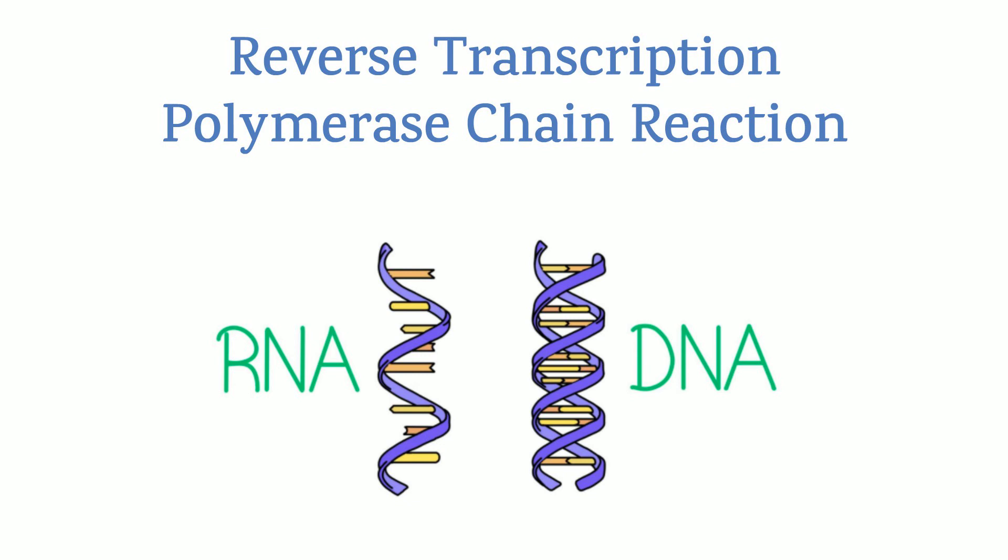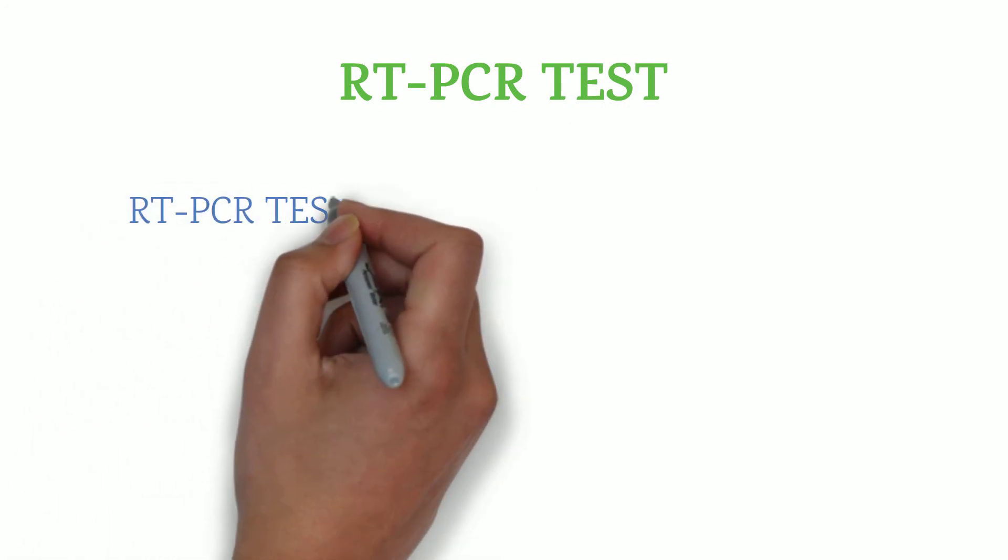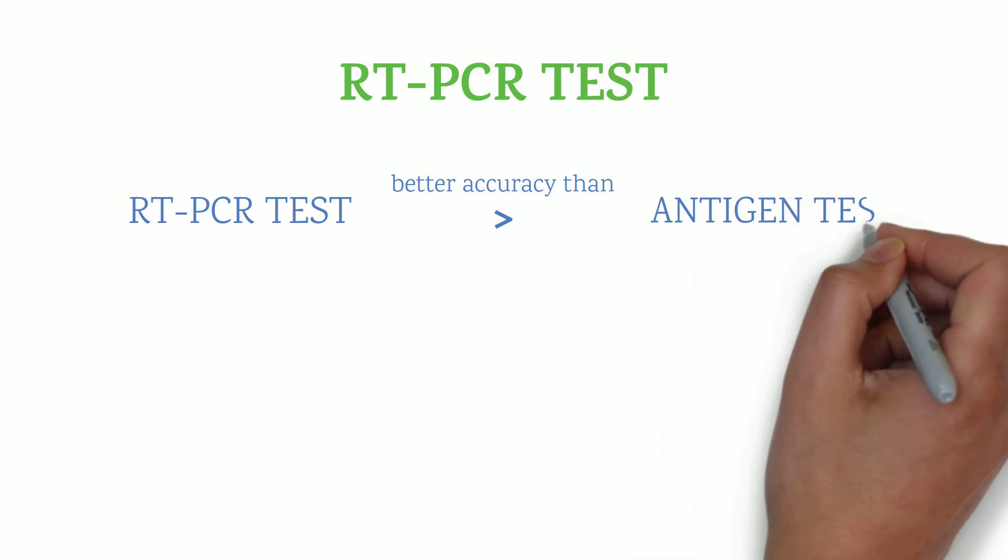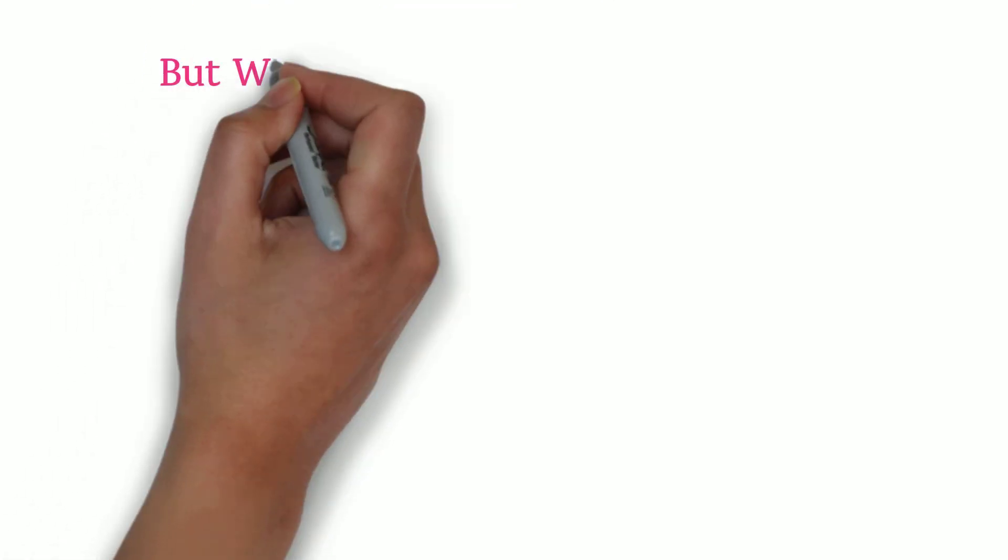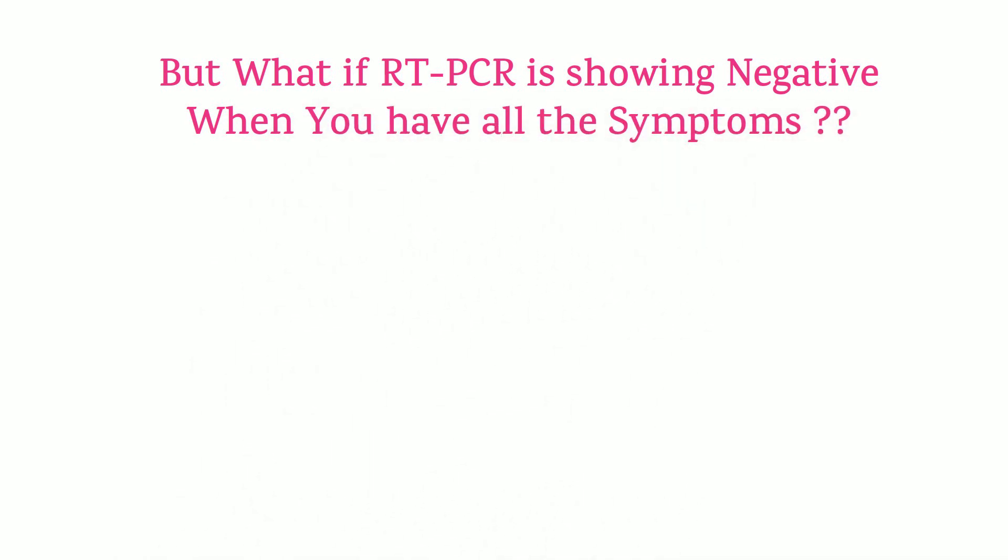RT-PCR test has better accuracy than antigen test, but a test is a test. What if even RT-PCR is showing a negative result when you have all the symptoms?